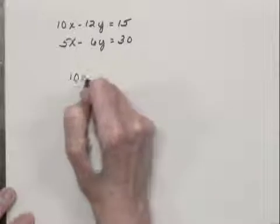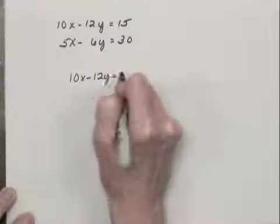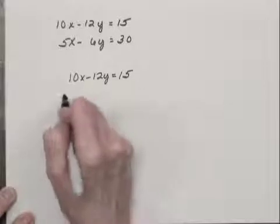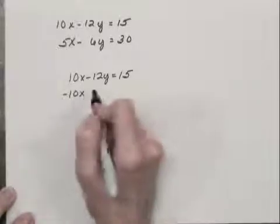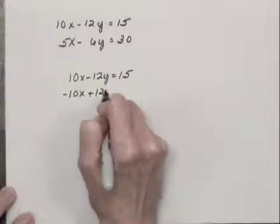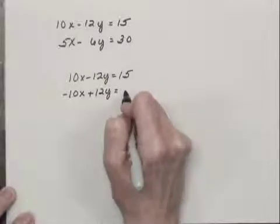So I'm just going to rewrite the first equation and multiply the second equation by negative two. So I'd have negative ten times x plus twelve y equals negative sixty. And now I'll add.